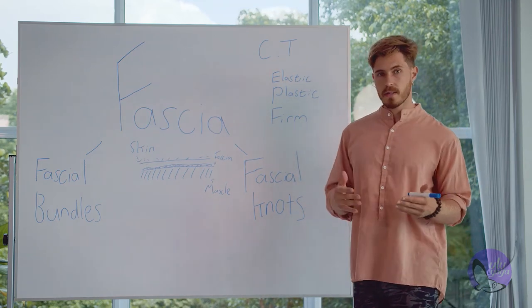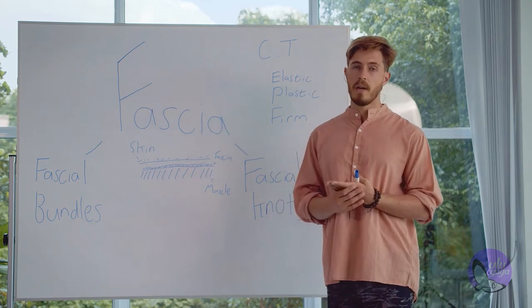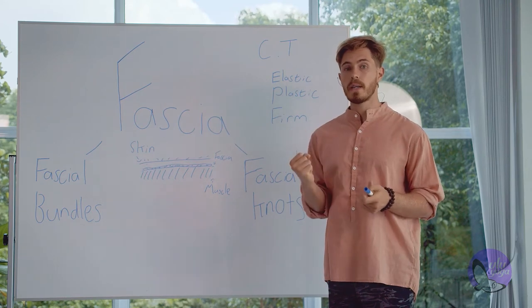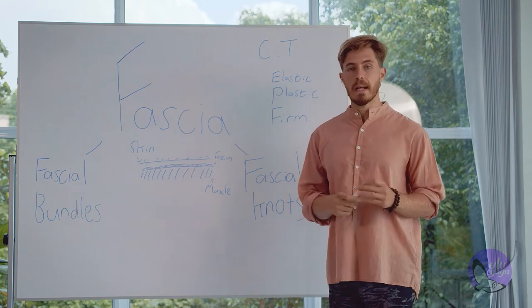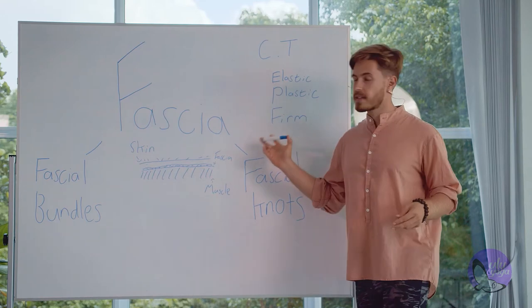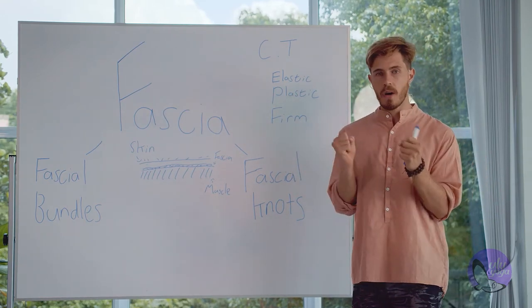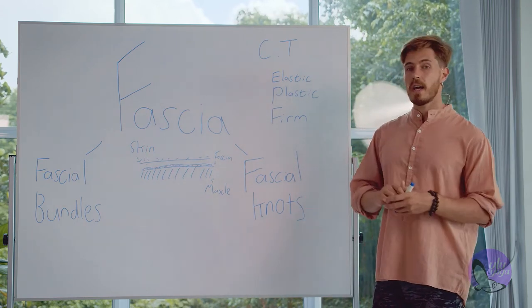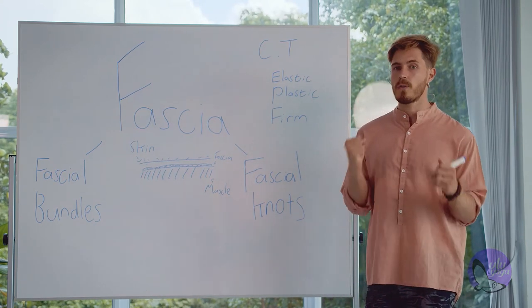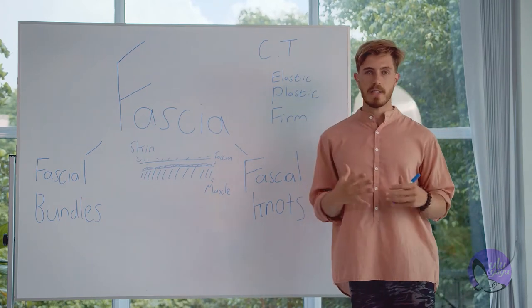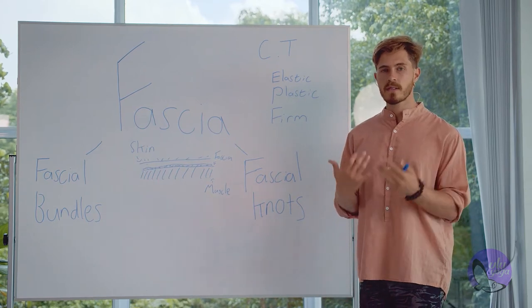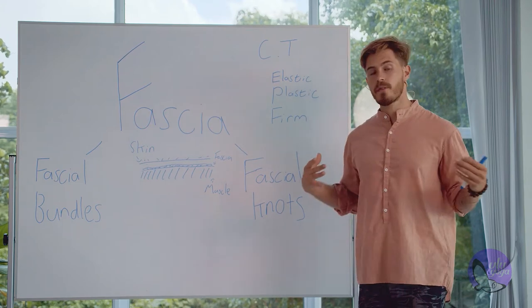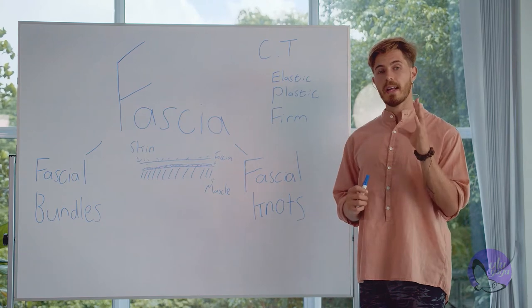A nice way to think of it: if you've ever done the experiment as a child where you mix water with cornstarch or corn flour — when you put your hand in slowly, it's easy, like a muddy density. But if you try to slam your hand into it, it becomes hard like the ground. Fascia acts in exactly the same way. If you try to move it fast, it becomes hard — which is great, because this is how we create muscular density through fascia and hold ourselves up in collaboration with our muscles.